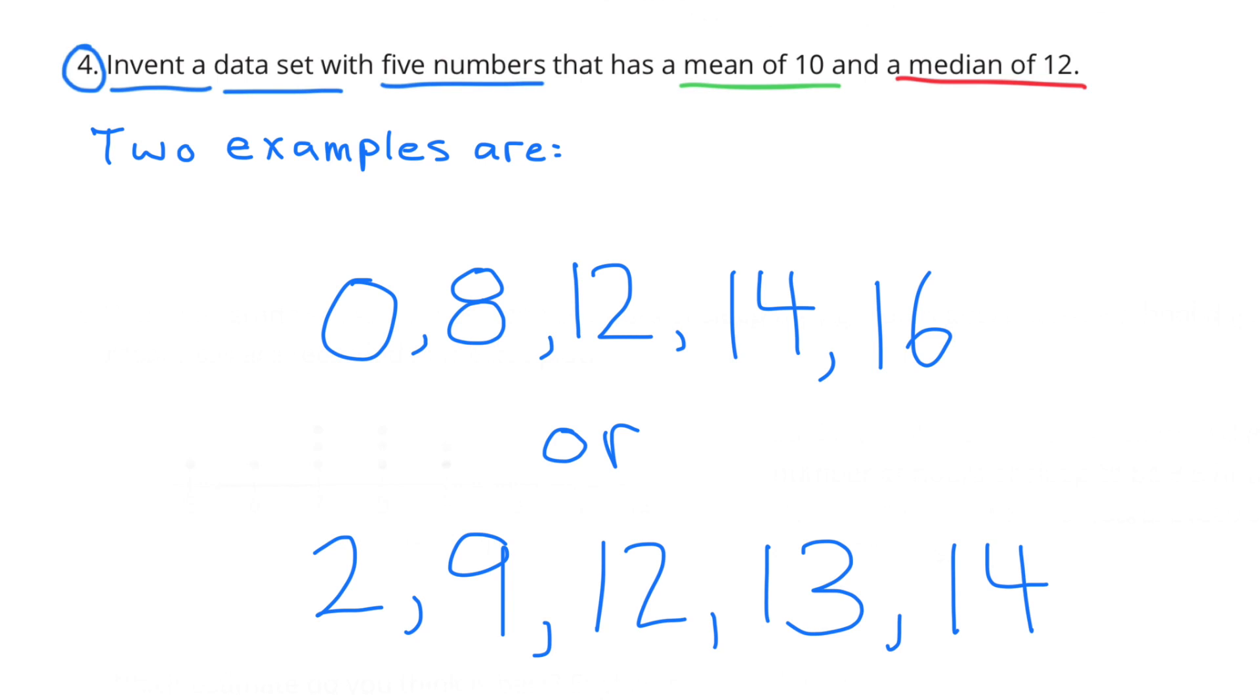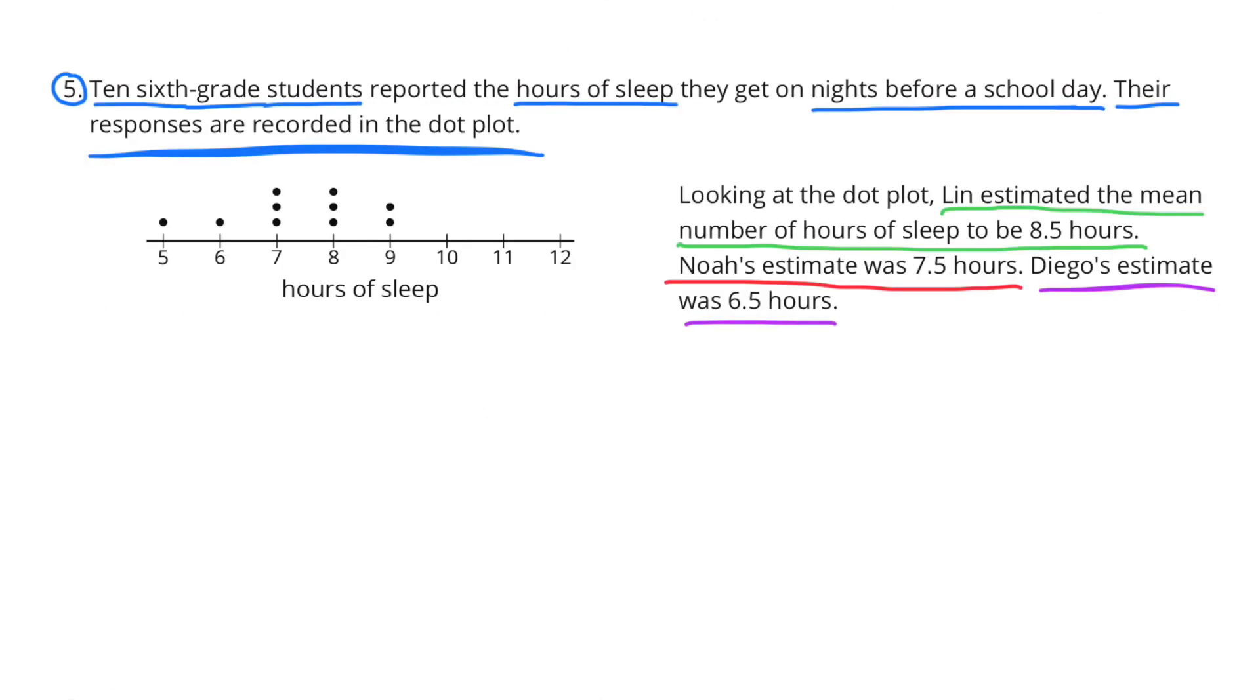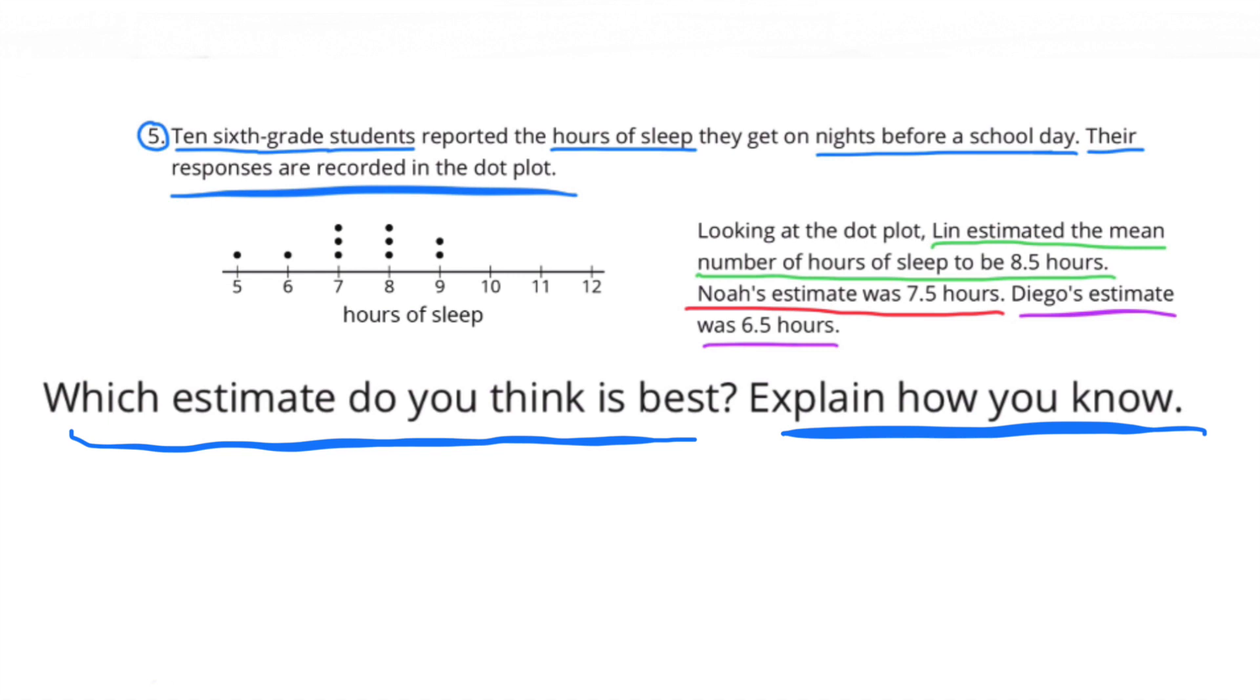Number five: Ten sixth grade students reported the hours of sleep they got on nights before a school day. Their responses are recorded in the dot plot. Looking at the dot plot, Lynn estimated the mean number of hours of sleep to be 8.5 hours, Noah's estimate was 7.5 hours, Diego's estimate was 6.5 hours. Which estimate do you think is best? Explain how you know.